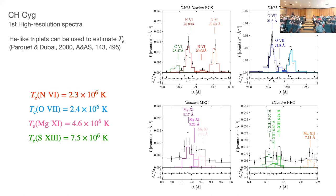The N VI and O VII triplets correspond to the soft X-ray emission that doesn't see heavy extinction. The Mg IX and Si XIII triplets come from the hard X-ray emission that is more heavily extinguished. Spatially we don't have that information, but the upper triplets are produced in a more extended hot region.